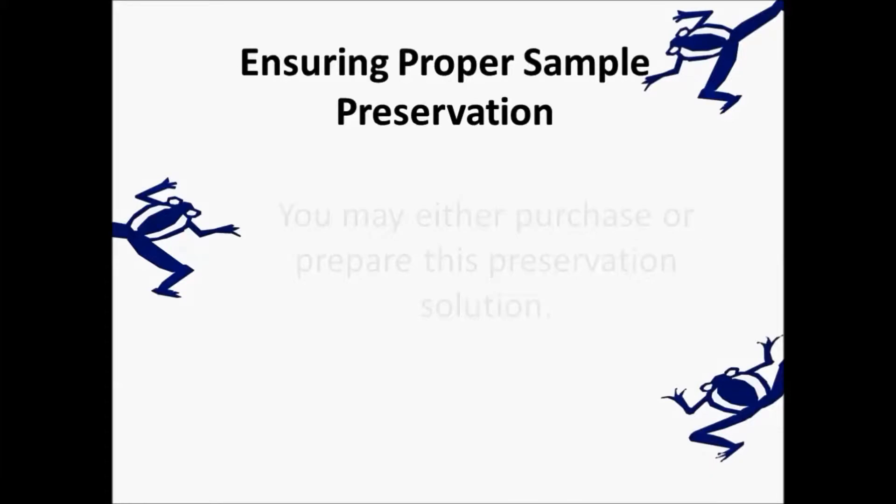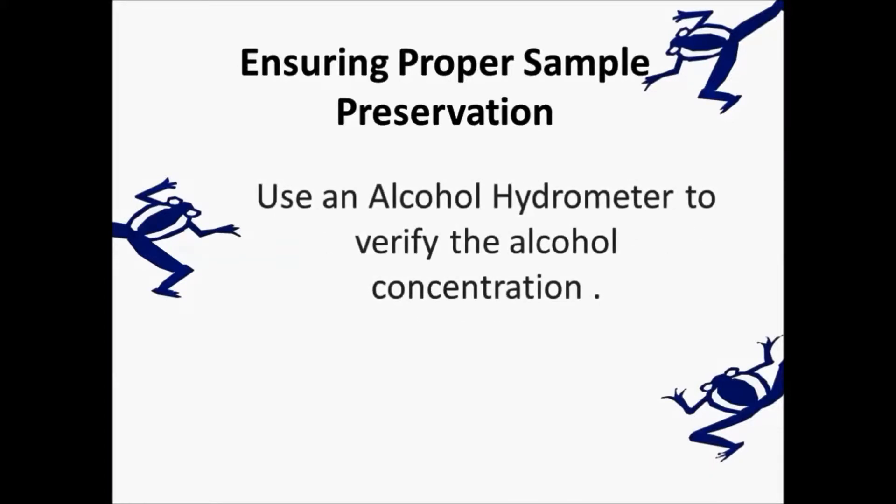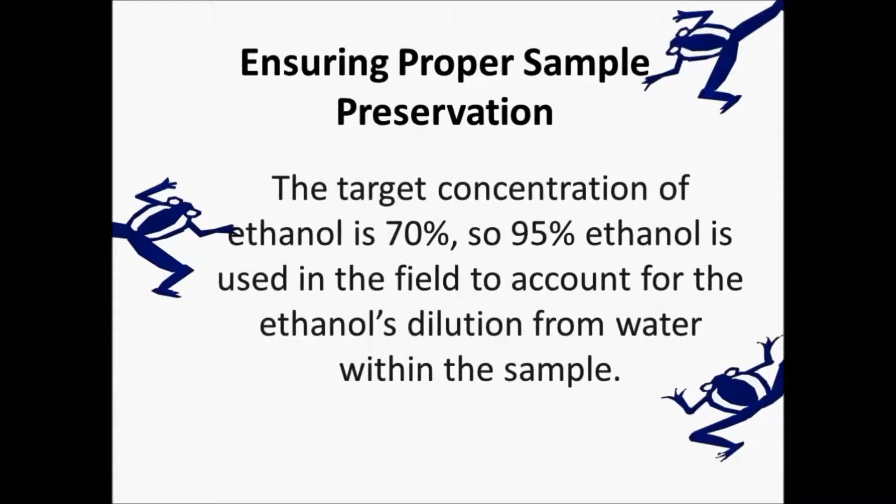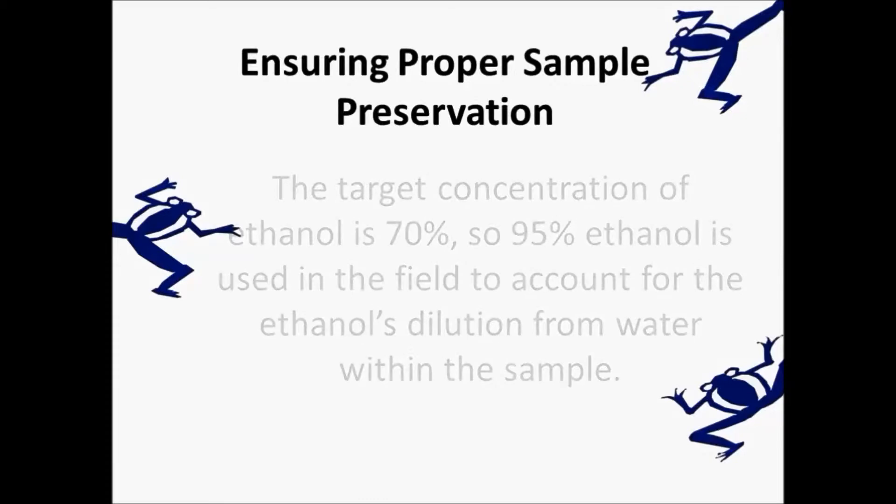Use an alcohol hydrometer to verify the alcohol concentration. The target concentration of ethanol is 70%, so 95% ethanol is used in the field to account for the ethanol's dilution from water within the sample.